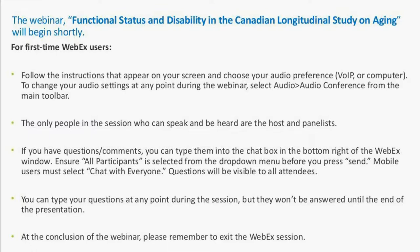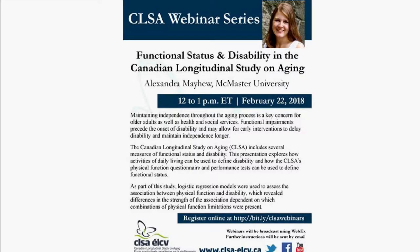Today's webinar is Functional Status and Disability in the Canadian Longitudinal Study on Aging. Welcome to our speaker, Alexander Mayhew, a PhD candidate in the Department of Health Research Methods, Evidence and Impact at McMaster University. She previously completed her Bachelor's of Applied Science at the University of Guelph in Applied Human Nutrition and a Master's in Health Research Methodology at McMaster. Her current research includes estimating dietary intake in large cohort studies, assessing methods of defining muscle mass loss in older adults, and understanding patterns of physical function and disability limitations.